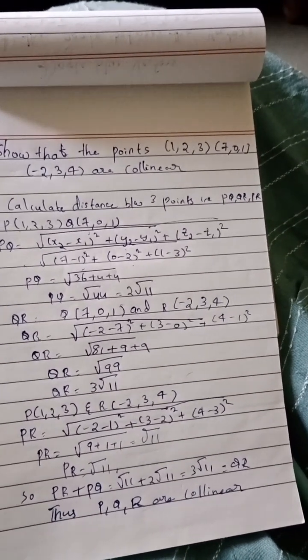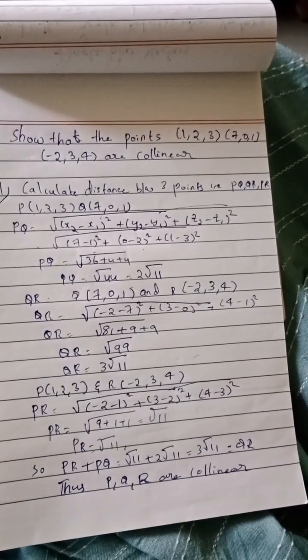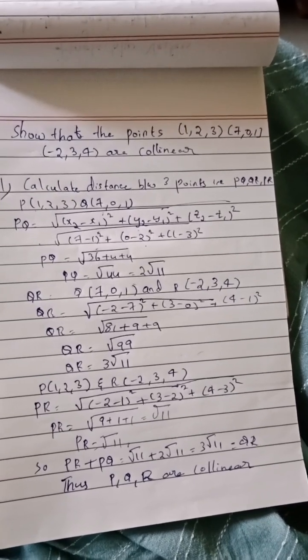Then PR - same formula. (-2 minus 1) whole square plus (3 minus 2) whole square plus (4 minus 3) whole square. Then we'll be getting root 11.